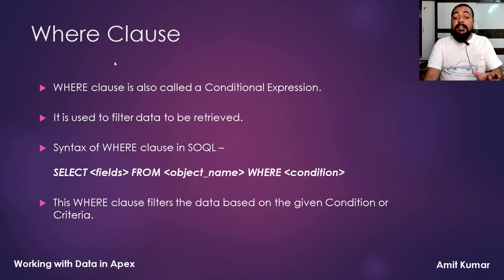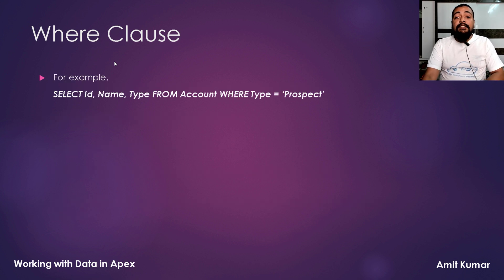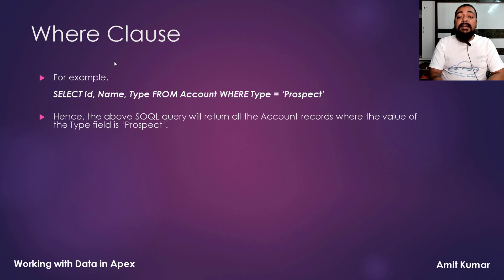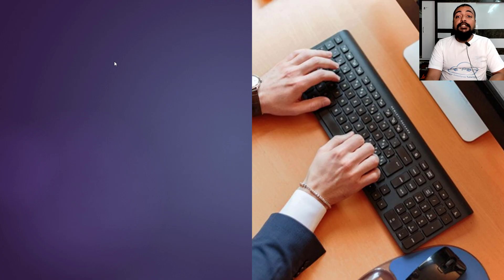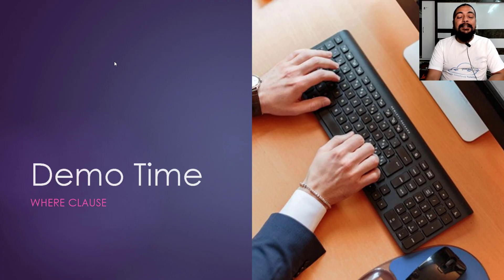Whatever condition we want to specify to filter the records coming from the object, we specify that after the WHERE statement. For example, if I want the ID, name, and type fields from the Account object where the type is 'Prospect', this query will return all account records where the value of the type field is Prospect. The conditions can use relational or comparison operators: greater than, greater than or equal to, less than, less than or equal to, equal to, and not equal to.